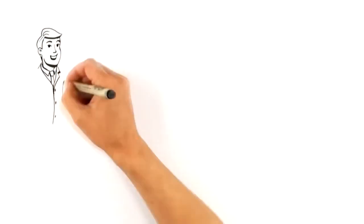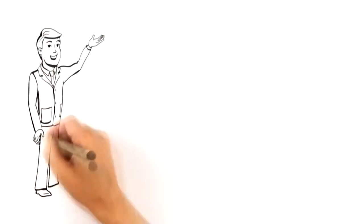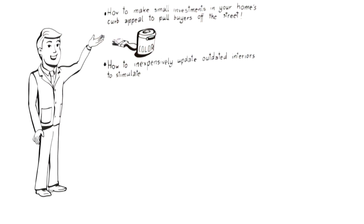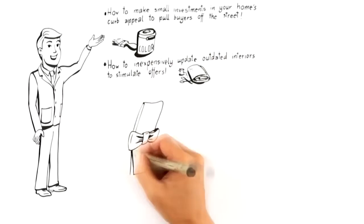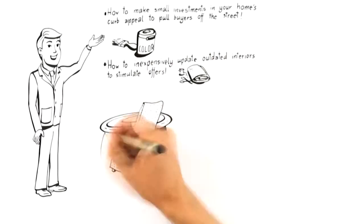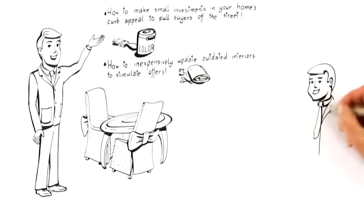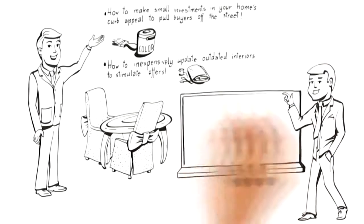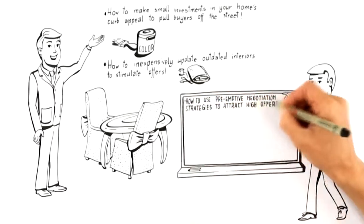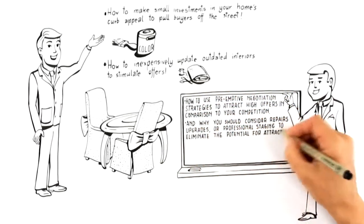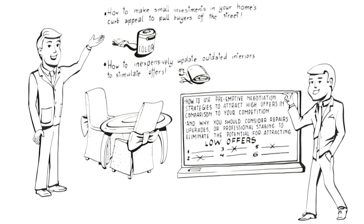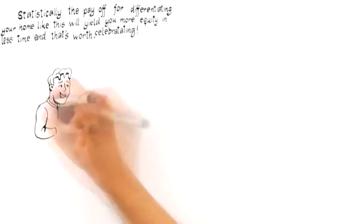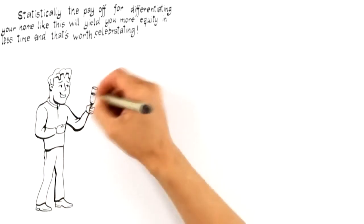This means the advice you should receive to attract buyers like this must include how to make small investments in your home's curb appeal to pull buyers off the street, how to inexpensively update outdated interiors to stimulate offers, how to use preemptive negotiation strategies to attract high offers in comparison to your competition, and why you should consider repairs, upgrades, or professional staging to eliminate the potential for attracting low offers. Statistically, the payoff for differentiating your home like this will yield you more equity in less time, and that's worth celebrating.